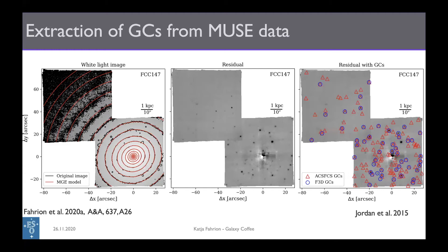To find the ones that are truly globular clusters, we first cross-reference with an existing photometric catalogue from the HST. Then, crucially, with MUSE we have the possibility to extract individual globular cluster spectra and also remove the contribution of the surrounding galaxy light from those spectra.